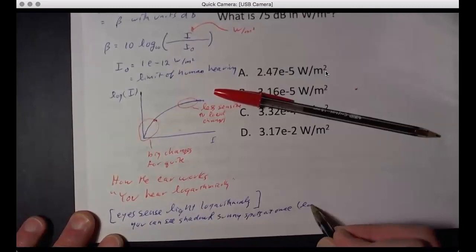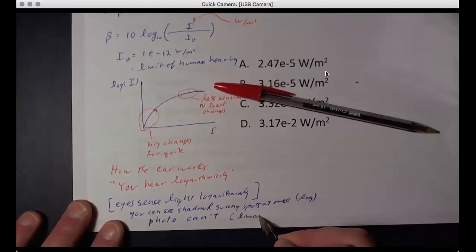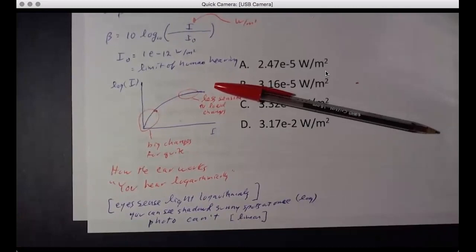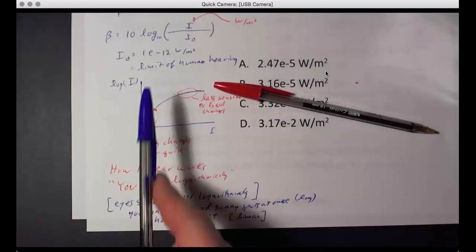That's why you can see both shadow and sunny areas at once — that's the log at work. If you take a picture, the camera can't do it because the camera is linear. You look at a scene and can see what's in the shadow and what's in the sun next to it. You take a picture, the camera gives you black in the shadow and bright in the sun — you can't see both. That's why we measure sound in decibels.